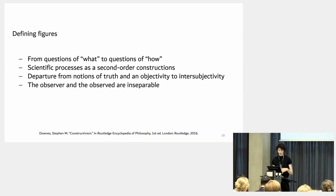And of course, I think this is very important and we could discuss it further, is the departure from notions of truth and the ideal objectivity to intersubjectivity. And the last point would be the connection between the observer and the observed.